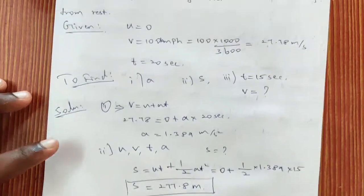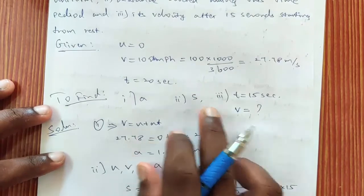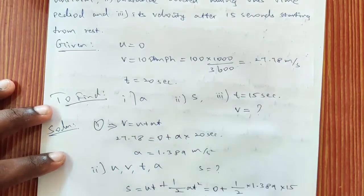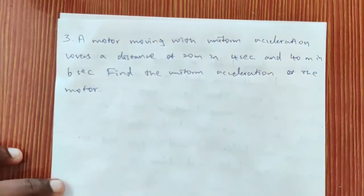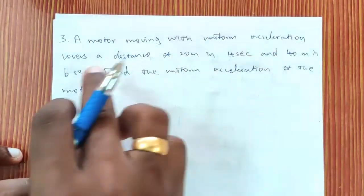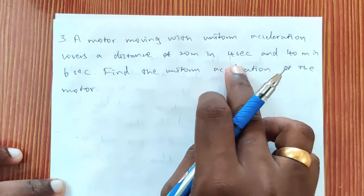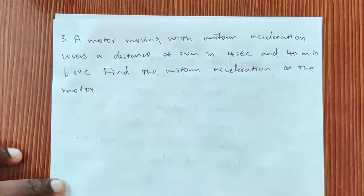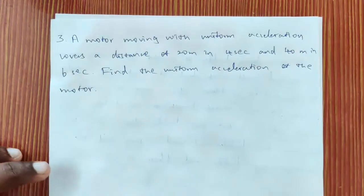So we have calculated the acceleration, the distance and the velocity after 15 seconds for the electric train problem. Now the third problem: a motor moving with uniform acceleration covers a distance of 20 metres in 4 seconds and 40 metres in 6 seconds. Find the uniform acceleration of the motor.